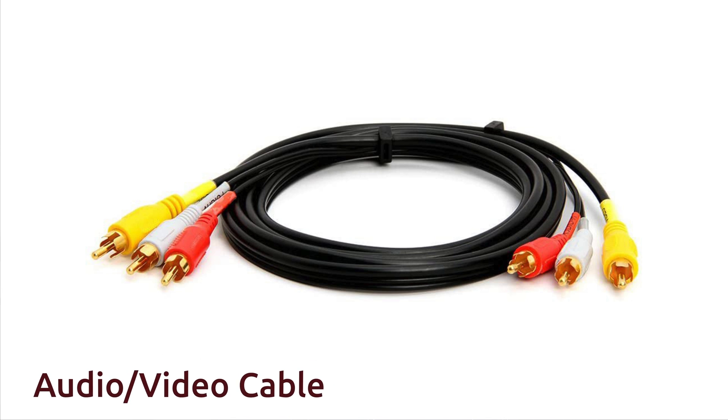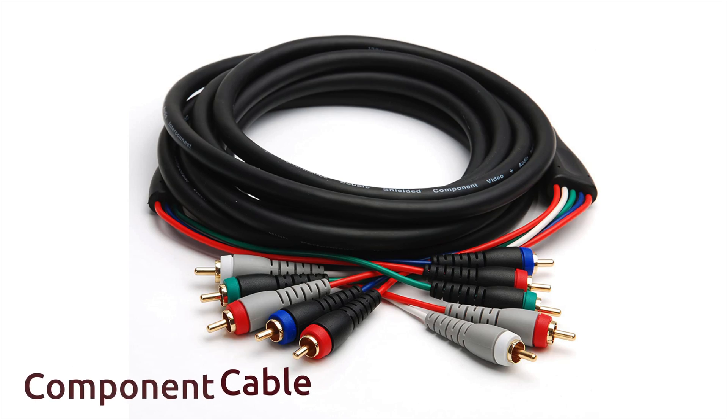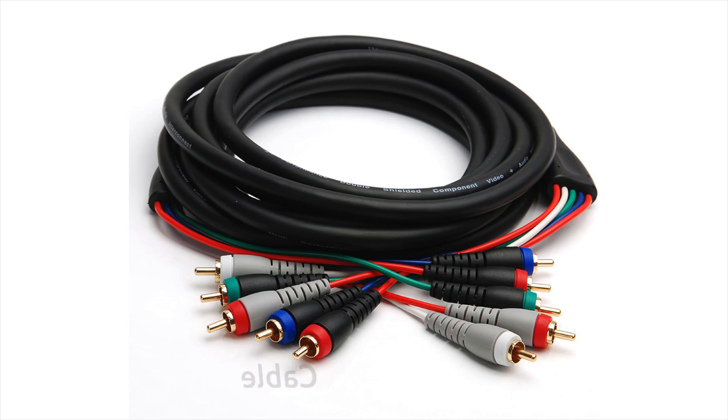Depending on your age, you know there are different cables used to connect your devices to your TV. There was the audio and video cable, which had the yellow, white, and red connectors — yellow for video, white for left audio, and red for right audio. The step up from that was the component cable, which divided into more separate channels for a better picture — red, blue, and green for video.